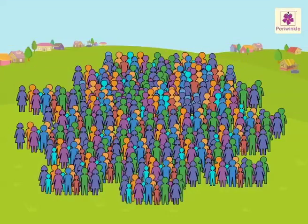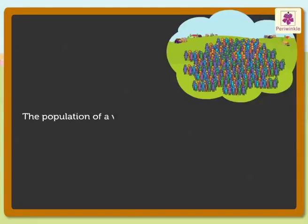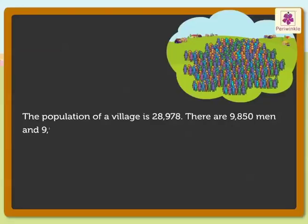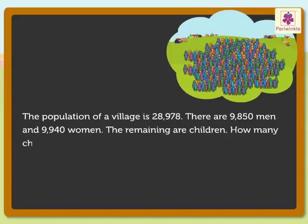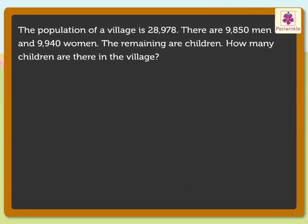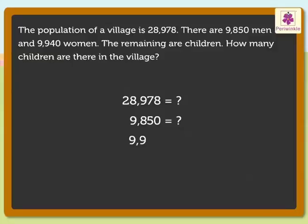Now, we will solve one more story. The population of a village is 28,978. There are 9,850 men and 9,940 women. The remaining are children. How many children are there in the village? Here, to be able to write the statements, we need to ask the following questions: What is 28,978? What is 9,850? And what is 9,940?